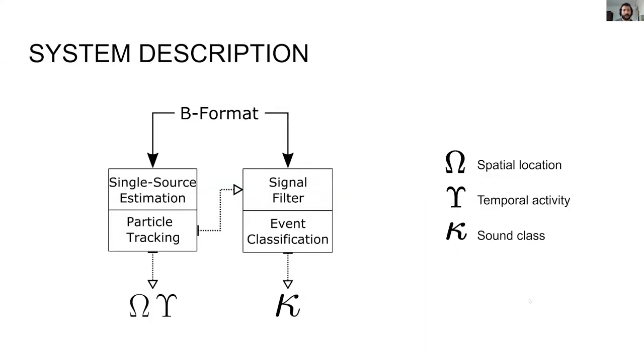PapaFil is based on four main building blocks. First, single source time frequency regions of the input ambisonic signal are found and localized using a parametric spatial model. The extracted data is fed into a particle tracking system which estimates two of the three required informations: sound event trajectories and temporal activations. In parallel, the input signal is spatially filtered by beamforming using the computed localization. Finally, the resulting signal is assigned a label by the classifier, thus obtaining the remaining information.